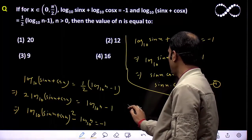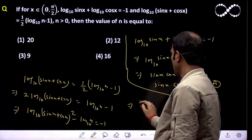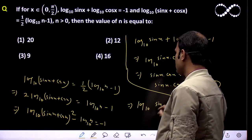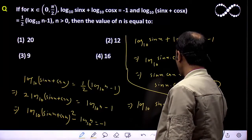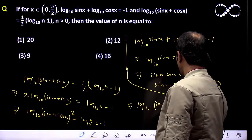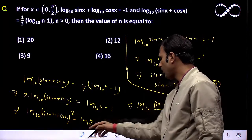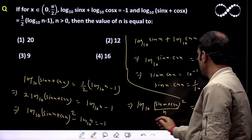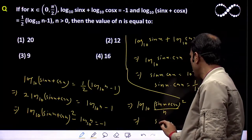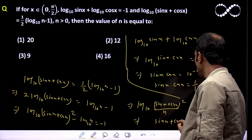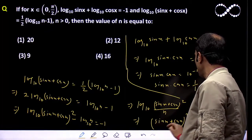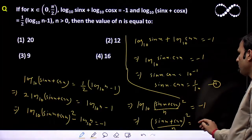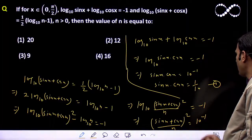So this implies log of (sin x + cos x) squared upon n equal to minus 1. That means (sin x + cos x)² / n = 10 to the power minus 1.